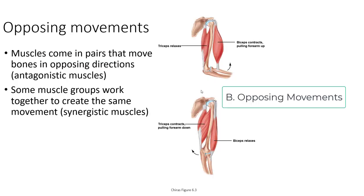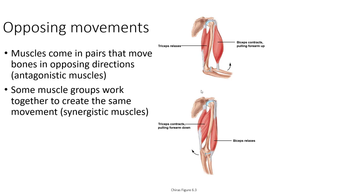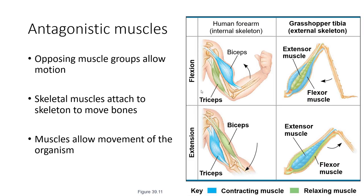Muscle systems work in pairs with opposing movements, allowing antagonistic muscles to move things in opposite directions. This lets a limb move backwards and forwards rather than just in one direction. Some muscle groups work together to create similar movements — think about your pectoralis minor and major. Antagonistic muscle groups work not only in the mammalian system but in the insect system as well, where you have extensors and flexors as interior muscles with an external skeleton. They are still skeletal muscles because they bind to the external skeleton.